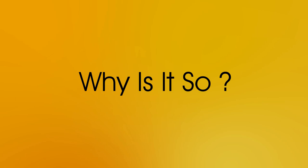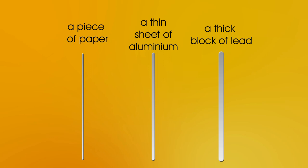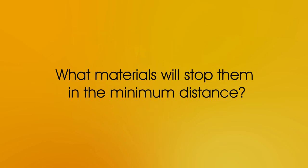We'll look at why this is the case in a moment, but first let's look at what we would need to use to stop each one in the minimum distance possible. We have radiation coming from the left side of the screen, and we'll place a material in the middle of the screen and see if that stops it.